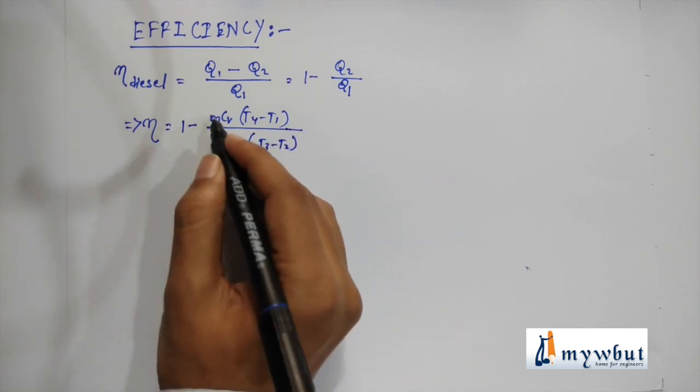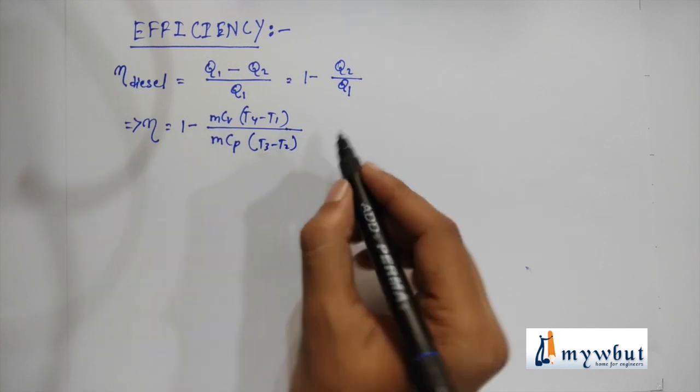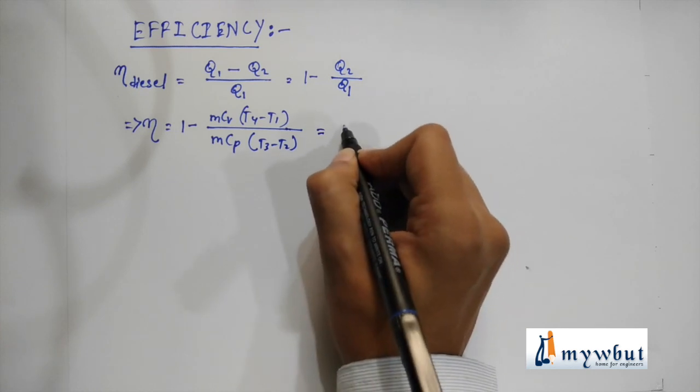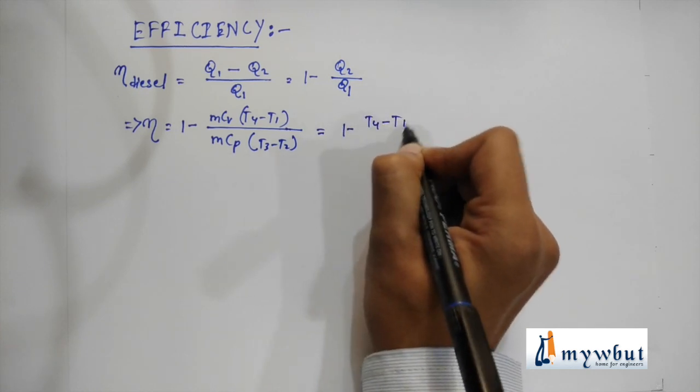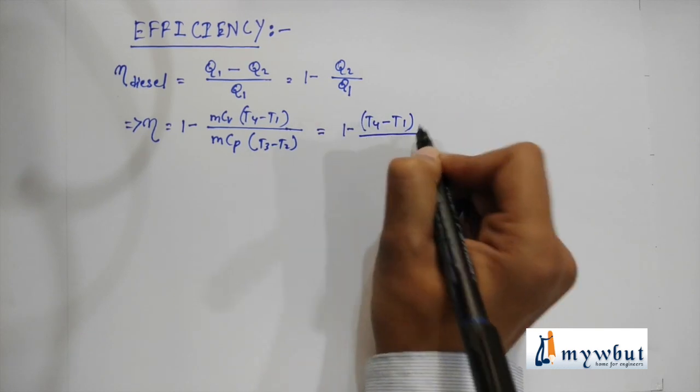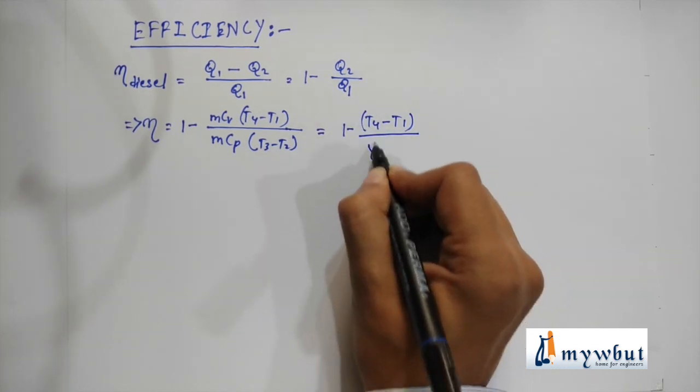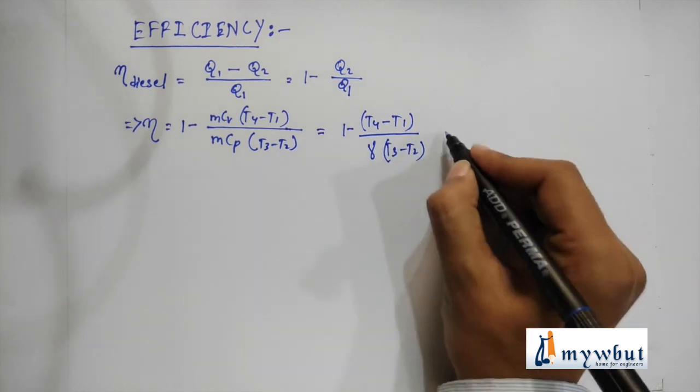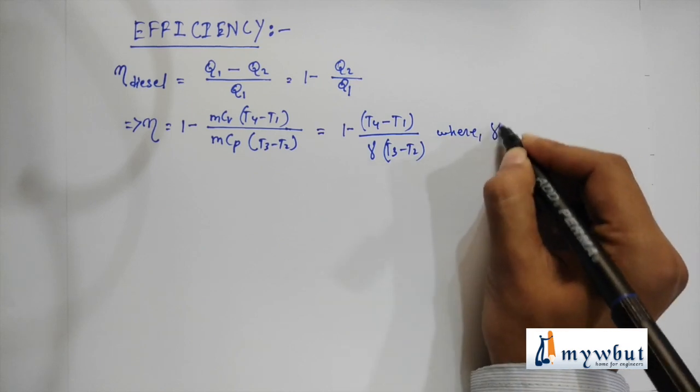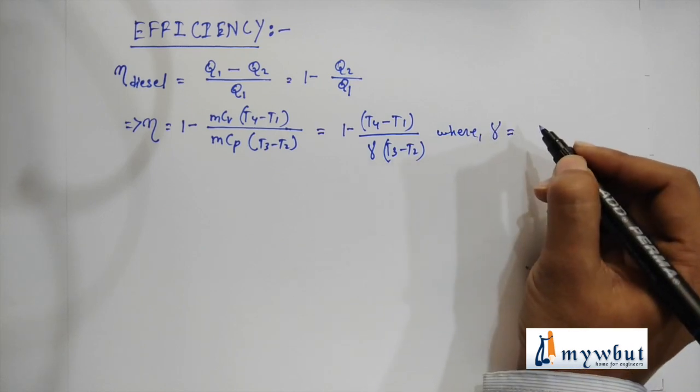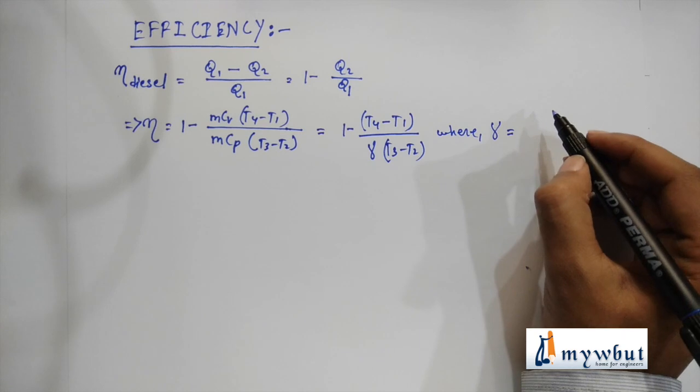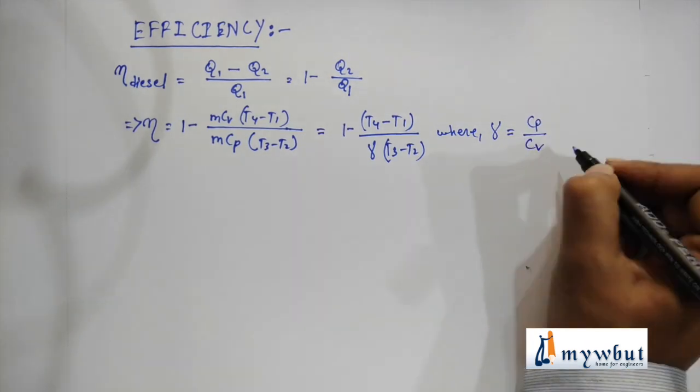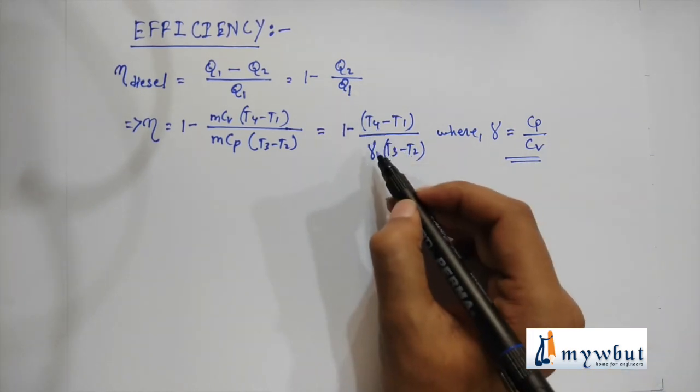So here m gets cancelled and we get the final value as 1 - (T4 - T1)/(gamma*(T3 - T2)), where gamma is equal to cp/cv, hence it becomes 1/gamma.